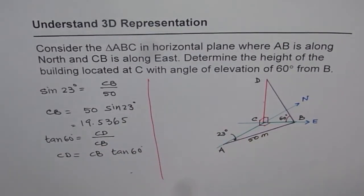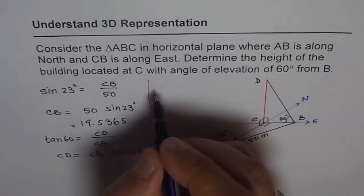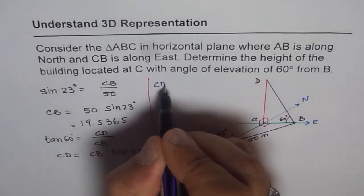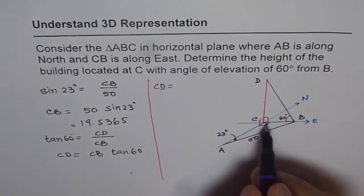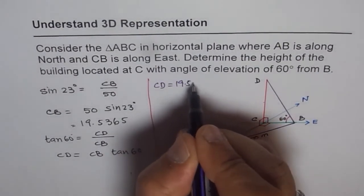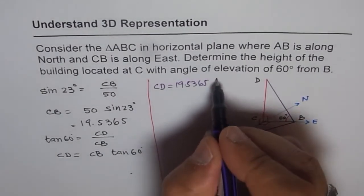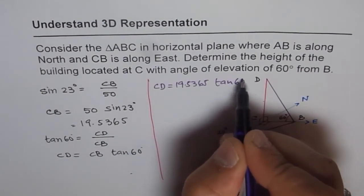So that is a general method of solving such a question. Now, let's calculate these values and find height of the building. We can say height of the building, which is CD, is equal to CB we found as 19.5365 times tan of 60, times tan of 60 degrees.